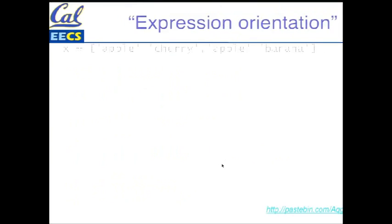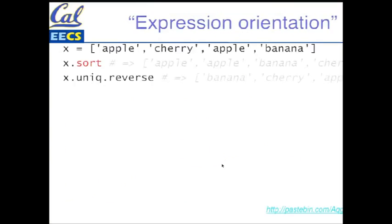Some people call this expression orientation in Ruby, which means I can take collections of things like this array, call sort on it, call uniq which removes duplicates, and call reverse on the result of that — chaining these expressions together. Remember, none of these are actually modifying X. X.sort creates a new copy of X and sorts it. X.uniq.reverse creates a copy here and another copy there and returns that. These are all non-destructive methods. Unless I use the dangerous version — X.reverse! Bang! — that actually will reverse X in place.